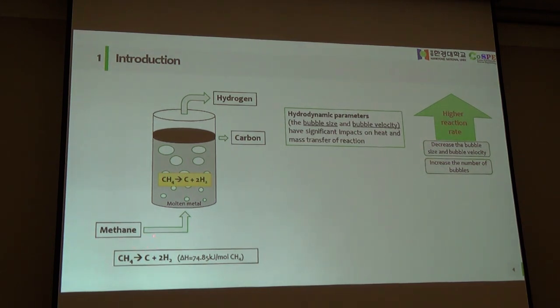In the cracking methane reaction, CH4 gas rises up in the column filled with liquid metal. The liquid metal is used to maintain the high temperature of reaction and also it is a catalyst for reaction. So it is called the molten-metal bubble column reactor. The hydrographic reactor of a molten-metal bubble column, such as the bubble size and velocity, has a significant effect on heat and mass transfer of reactions.